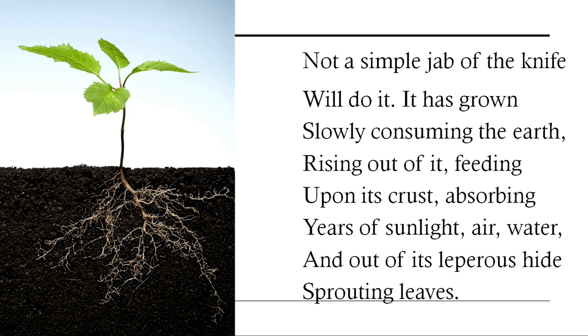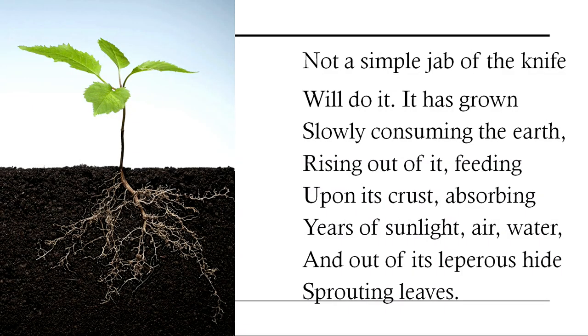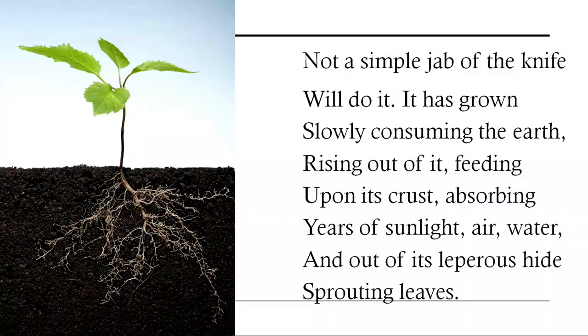A tree combines a lot of things — it takes elements from the soil, water, carbon dioxide; it photosynthesizes its own food. There's a lot of effort that goes into the synthesis of the material produced by the tree, and so it cannot be undone as easily as a human life can. 'Leprous hide' refers to the bark — the skin of the tree — which looks rough and thick, like it is leprosy-stricken, and from it sprout leaves.